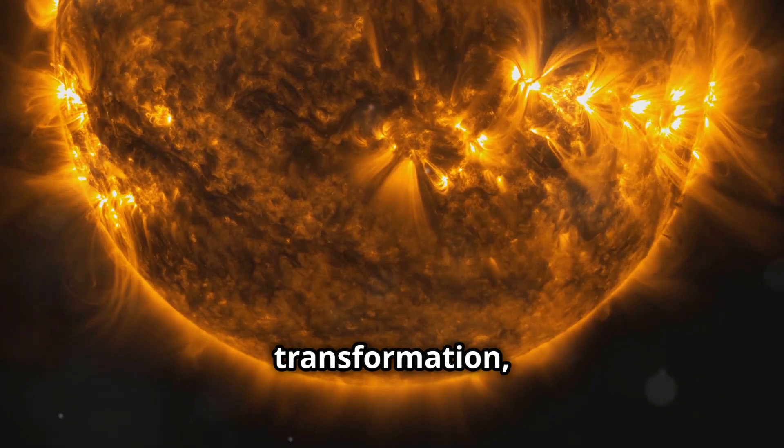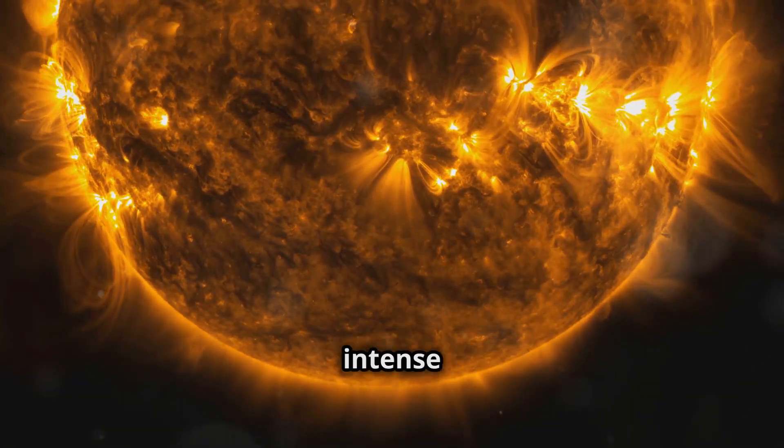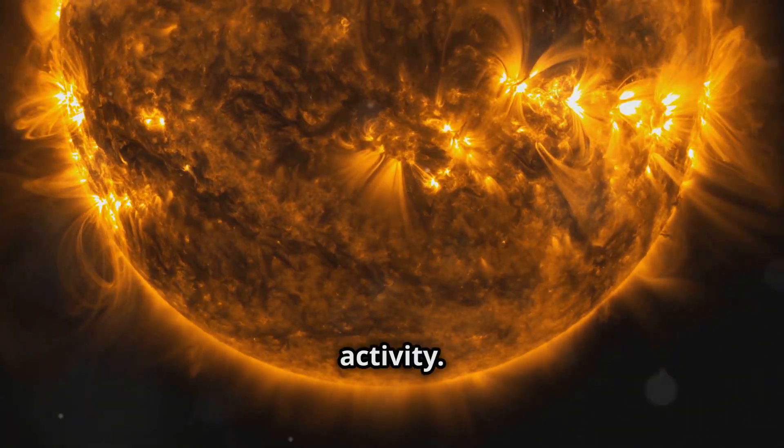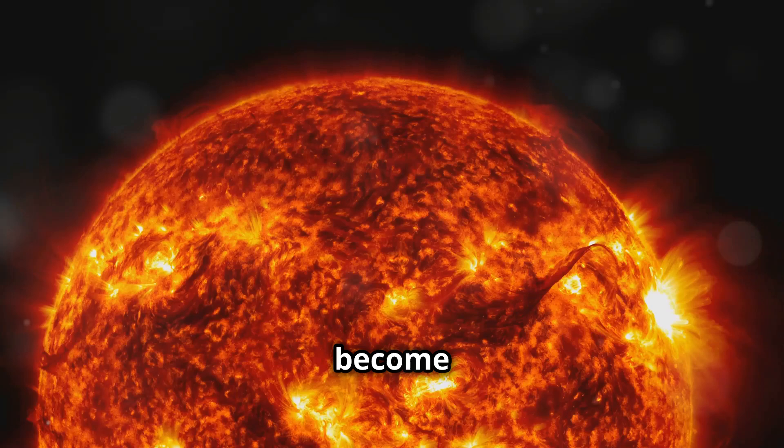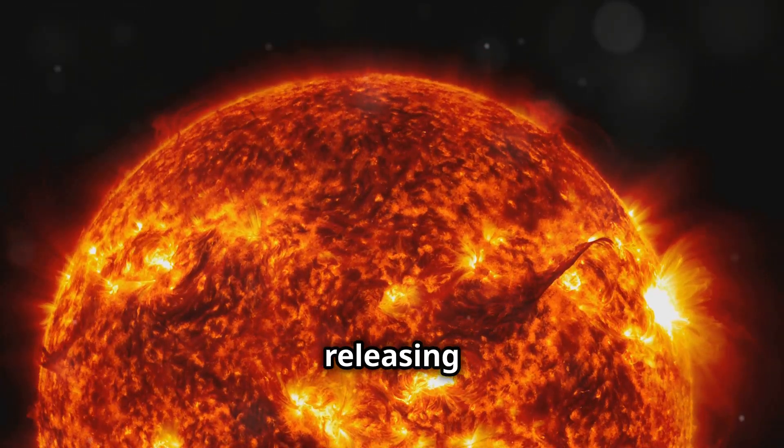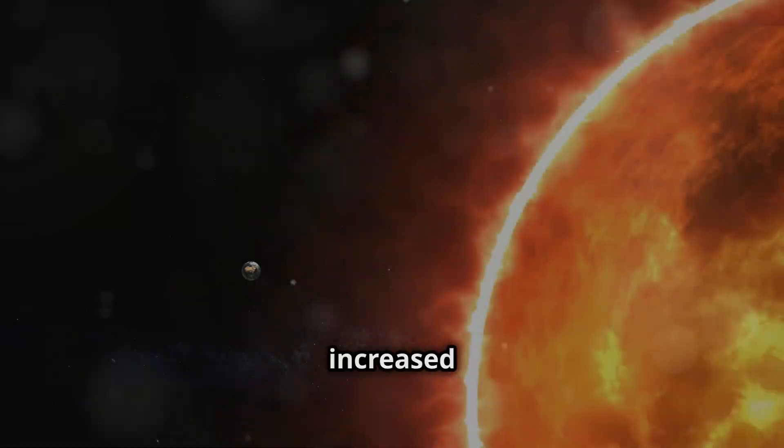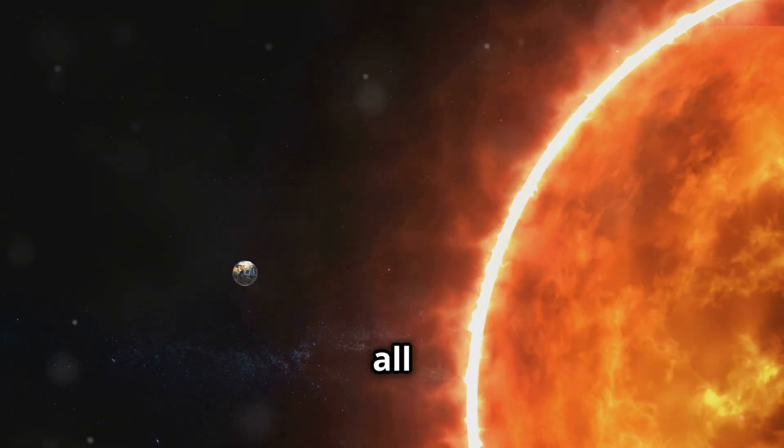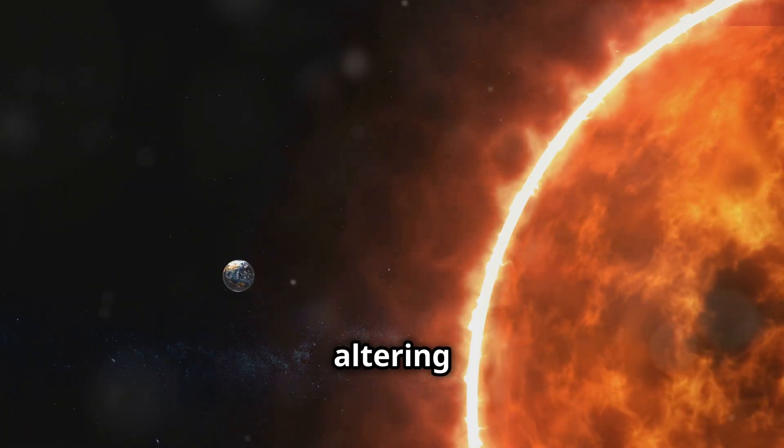But before this dramatic transformation, the sun will undergo intense changes marked by violent activity. Solar flares and storms will become more frequent and powerful, releasing massive amounts of energy. The increased solar activity will affect all the planets in our solar system, altering their environments.